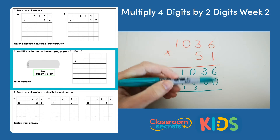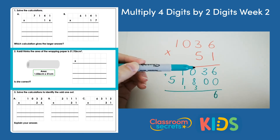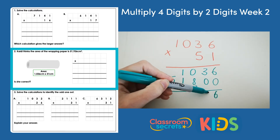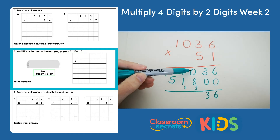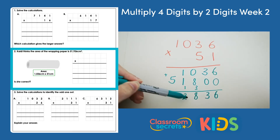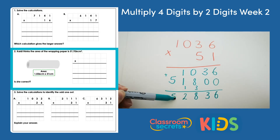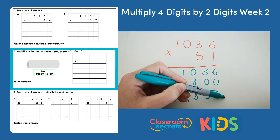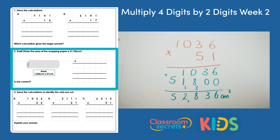Our final task is to add everything together. So 6 adds 0 makes 6. 3 and 0 gives us 3. 0 and 8 gives us 8. 1 and 1 gives us 2. And 5 and nothing gives us 5. So the correct answer for Katie's area is 52,836 centimetres squared. So Katie is incorrect, and that is the correct area.